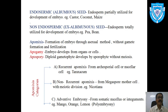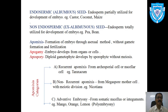In the non-endospermic or exalbuminous seed, the endosperm is totally utilized for the development of the embryo, and hence the seed is without endosperm. Examples are pea and bean.